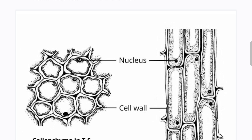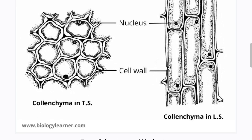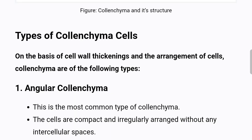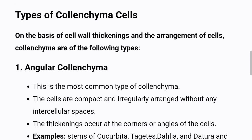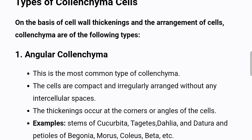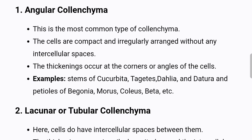Types of collenchyma cells: On the basis of cell wall thickenings and the arrangement of cells, collenchyma is of the following types. 1. Angular collenchyma — this is the most common type of collenchyma. The cells are compact and irregularly arranged, without any intercellular spaces.